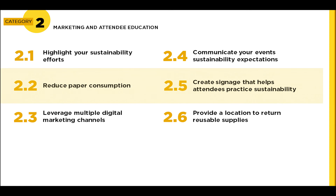There are six action items in this category. 2.1: promoting your event as a green event and highlighting your sustainability efforts in the marketing materials is a great way to showcase your organization's commitments and attract those who share similar values or interests. Action items 2.2 and 2.3 are focused on minimizing the use of paper flyers and other materials, and leveraging paperless digital communications and marketing channels to get the word out about your event.